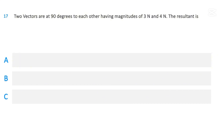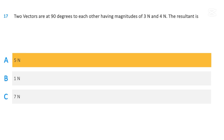Two vectors are at 90 degrees to each other, having magnitudes of 3 newtons and 4 newtons. The resultant is: 5 newtons; 1 newton; or 7 newtons. The correct answer is 5 newtons.